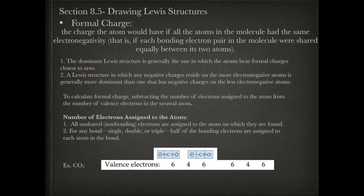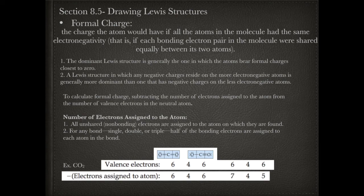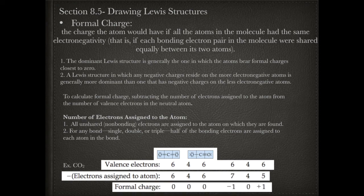In the second Lewis structure, the left oxygen has six lone electrons plus one single bond (one electron), totaling seven assigned electrons. The carbon has a single and a triple bond for four electrons, and the right oxygen has two lone electrons plus a triple bond for five total. Subtracting from valence electrons: the first structure has an overall formal charge of zero, while the second has charges of negative one and positive one. This tells us the structure with two double bonds is dominant — carbon dioxide exists with two double bonds, not a single and triple bond.